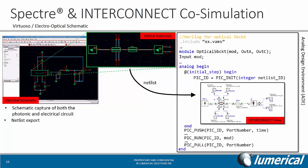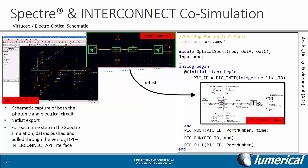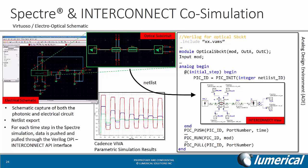To netlist and run the simulation in Spectre, the optical sub-circuit is automatically embedded into a Verilog-A wrapper. A netlist for the optical sub-circuit is generated and sent to Interconnect. For each time step in the Spectre simulation, data is pushed and pulled through the Verilog-DPI Interconnect API interface. The seamless integration within the Cadence analog design environment not only allows users to run the simulation, but also to visualize the results. This is a plot of the output signal for three different gains of the amplifier, and the optical time delay determines the period of the oscillation.